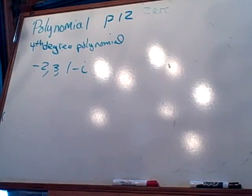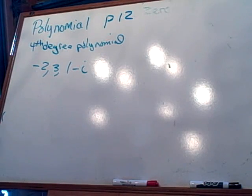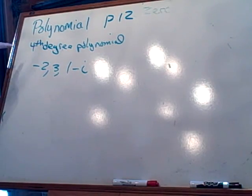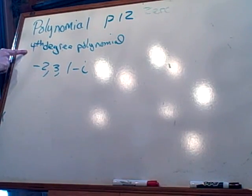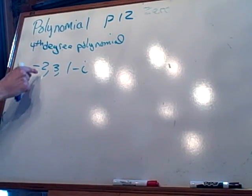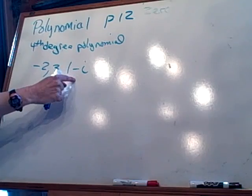We are on example, no, we're on page 12 polynomials. We're looking at the last example. It wants me to find a fourth degree polynomial with real coefficients whose zeros are negative two, three, and one minus i.